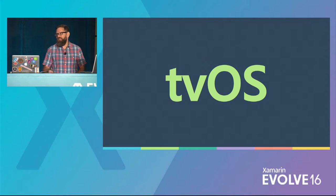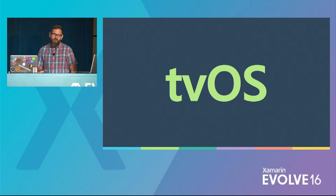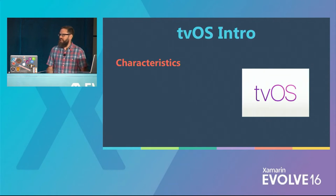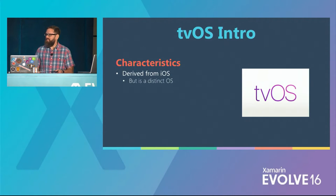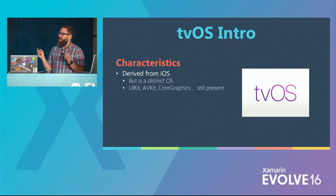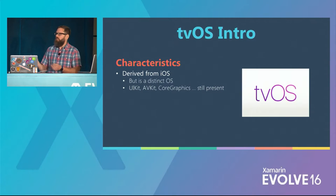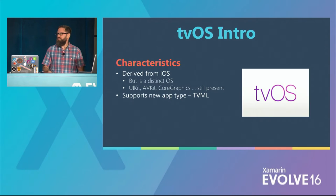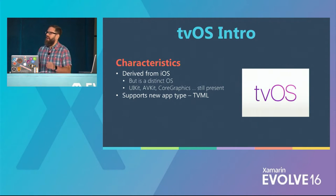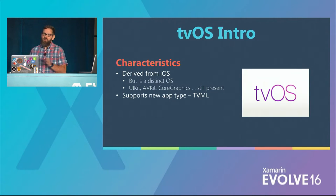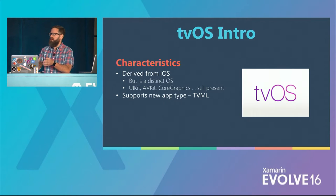tvOS is derived from iOS but is a distinct operating system — tvOS apps won't run on iPhone or iPad. Familiar frameworks are still present: UIKit, AVKit, CoreGraphics, and others, though they've been tweaked for TV development. tvOS also supports a new app type called TVML — a markup language where app logic is done in JavaScript. Apple has provided 18 different markup templates, essentially screens, that can be downloaded and changed at runtime, making it great for media streaming.